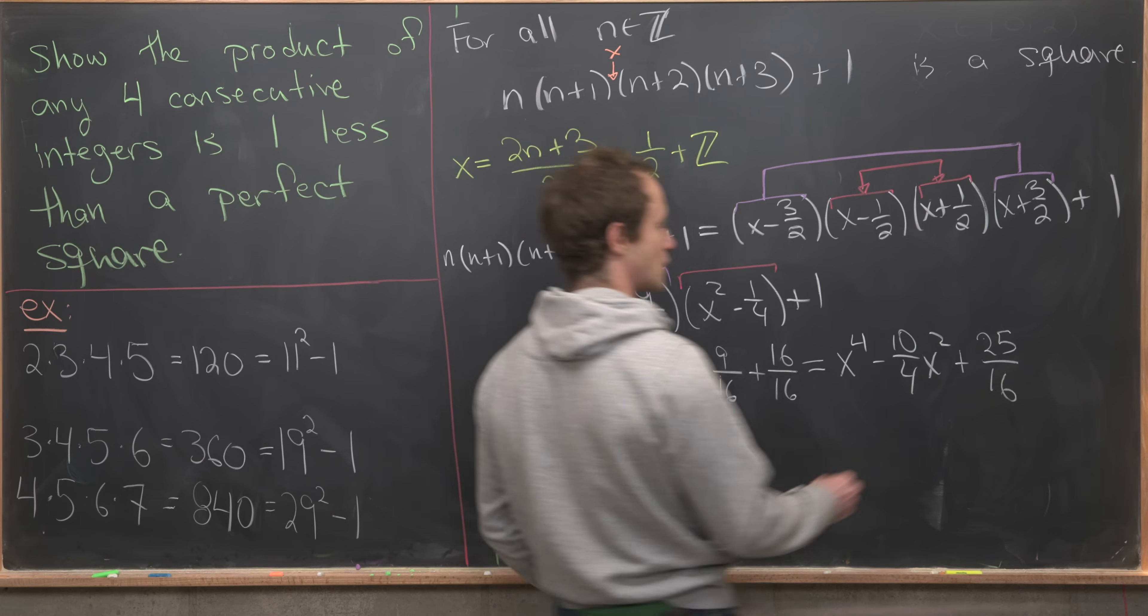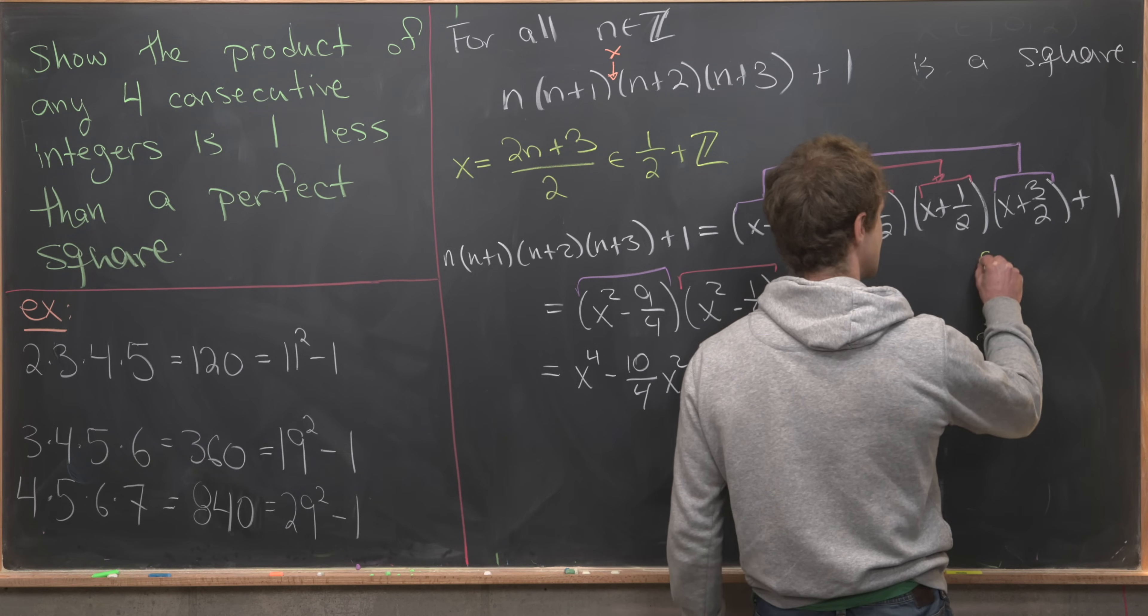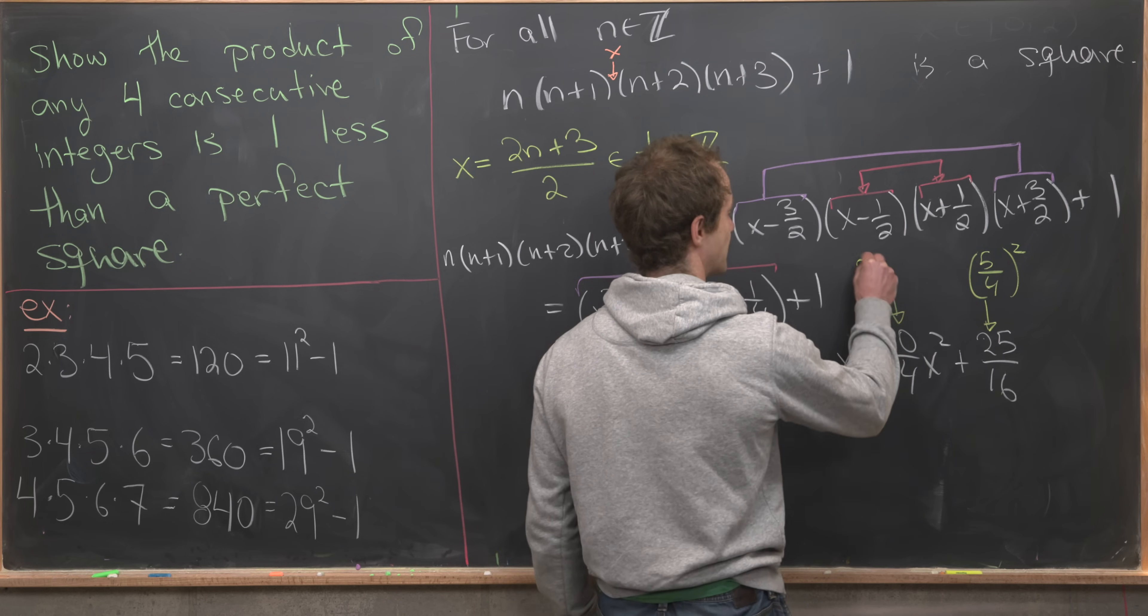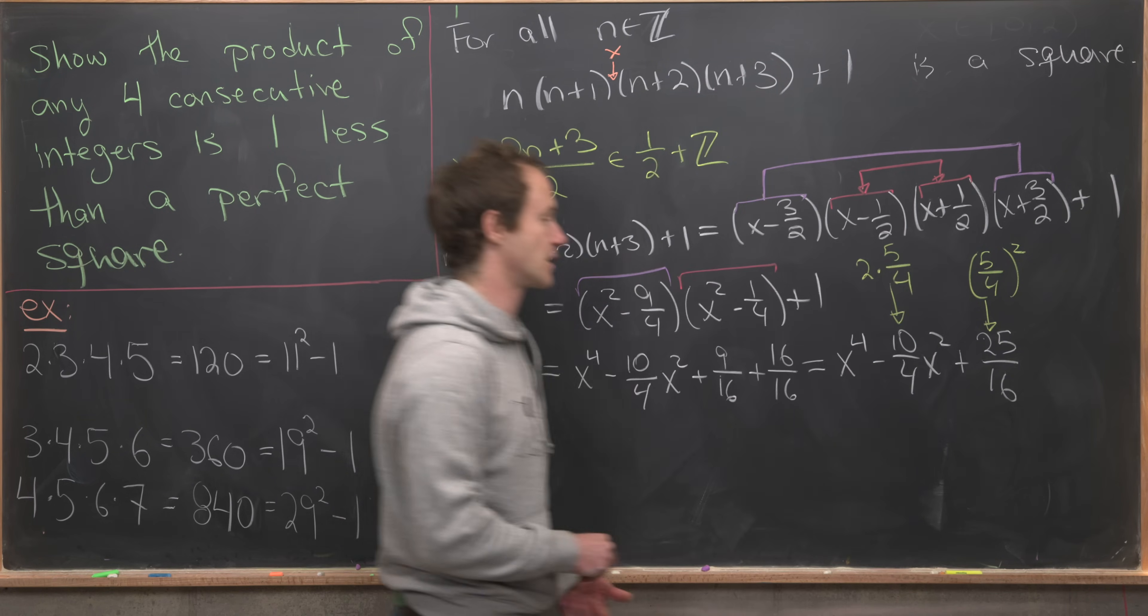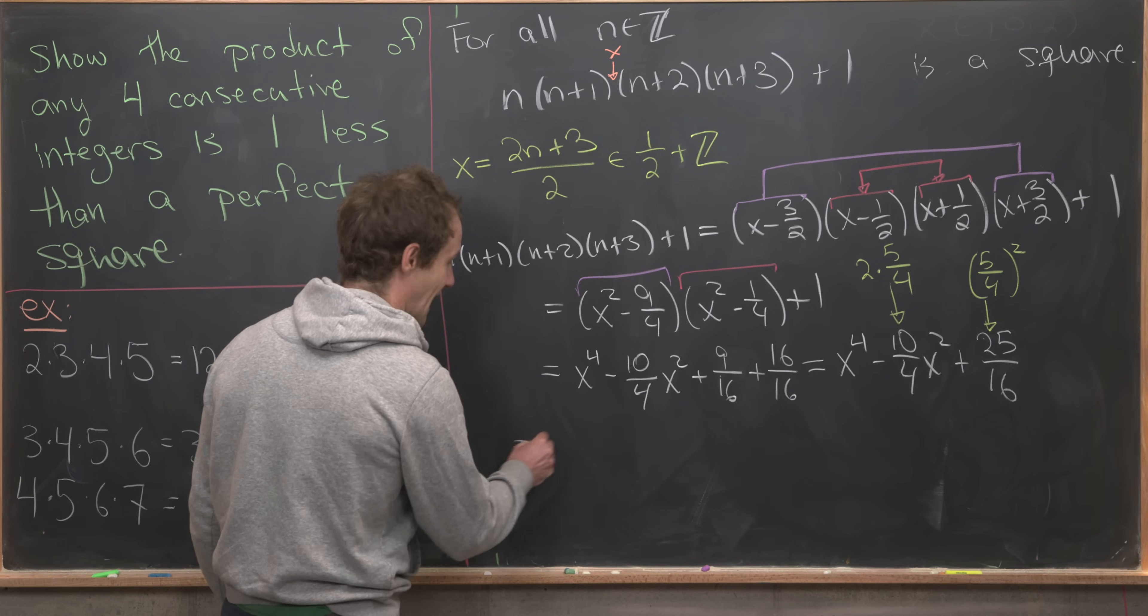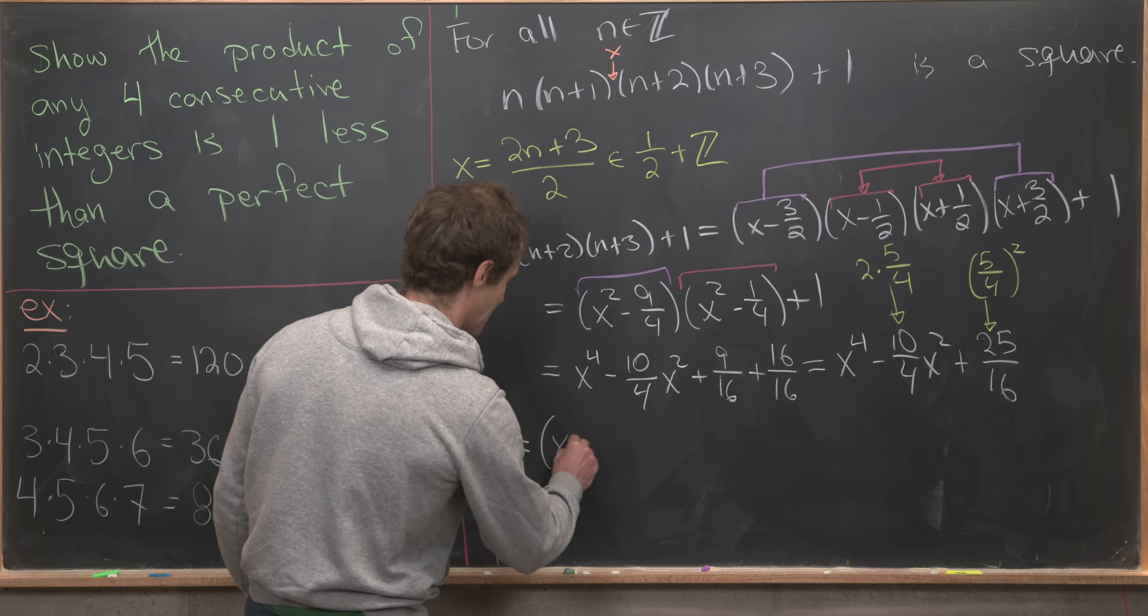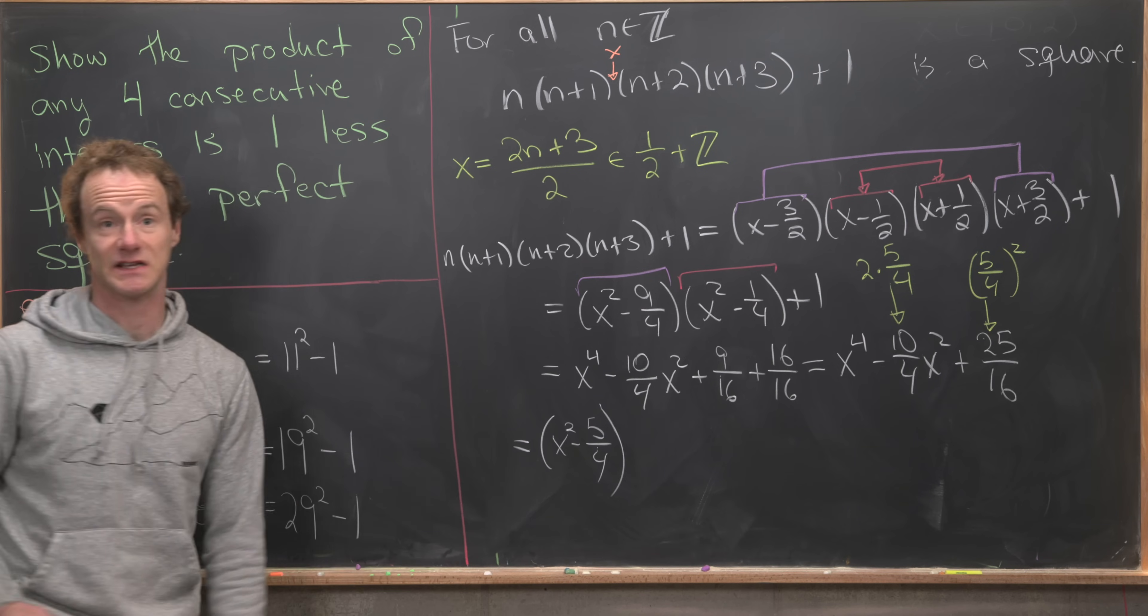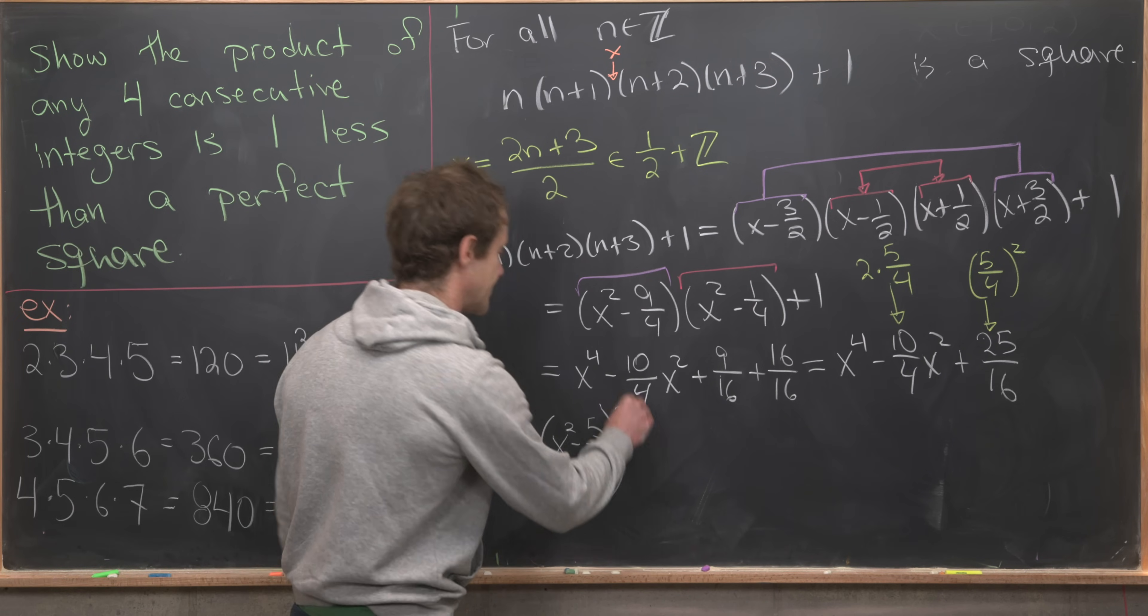Next, we can notice that this 25/16 is really (5/4)². This 10/4 is 2 times 5/4. That means we've got a perfect square binomial there. We can factor this as (x² - 5/4)².